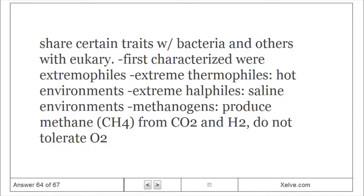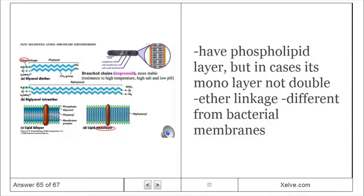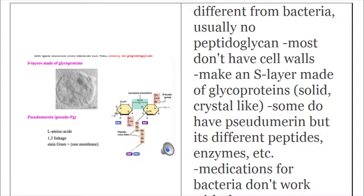Archaea share certain traits with bacteria and others with eukaryotes. The first characterized were extremophiles: extreme thermophiles (hot environments), extreme halophiles (saline environments), and methanogens (which produce methane CH₄ from CO₂ and H₂ and do not tolerate O₂). Archaeal cell membranes have a phospholipid layer, but in some cases it is a monolayer, not a double layer, and uses ether linkage instead of the ester linkage of bacterial membranes. Archaea usually lack peptidoglycan and most lack cell walls; instead they have an S-layer made of glycoproteins in a solid, crystal-like arrangement. Some do have pseudomurein but with different peptides, meaning antibiotics and enzymes targeting bacteria do not work against archaea.